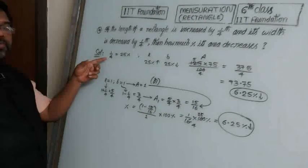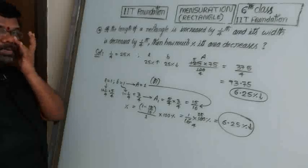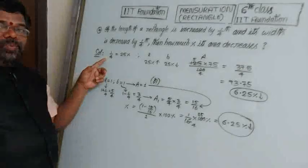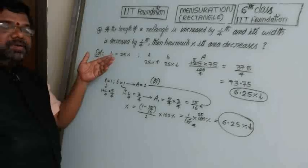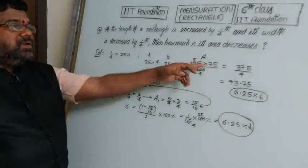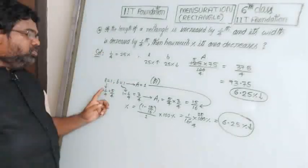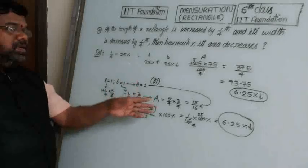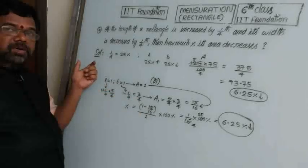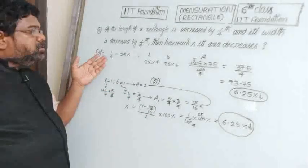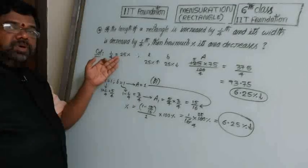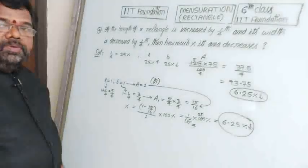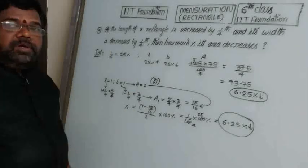Comparing the two approaches: converting 1/4th to 25% is simpler. However, if the fraction is 1/3rd (which gives 33.33%), converting is difficult, so use the fraction approach directly: 1/3rd increase means 1 plus 1/3 equals 4/3, and 1/3rd decrease means 1 minus 1/3 equals 2/3. Choose the approach based on the given values. In the next video, the remaining problems will be discussed.